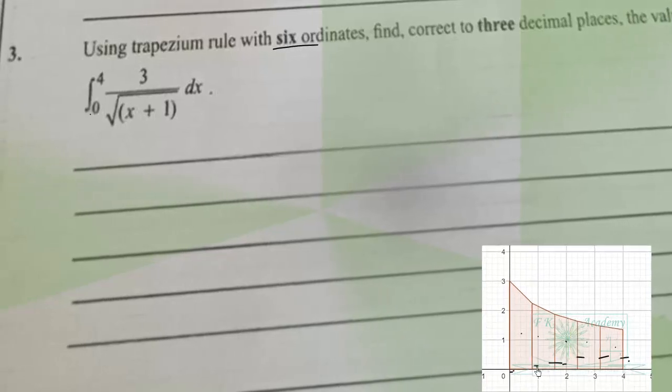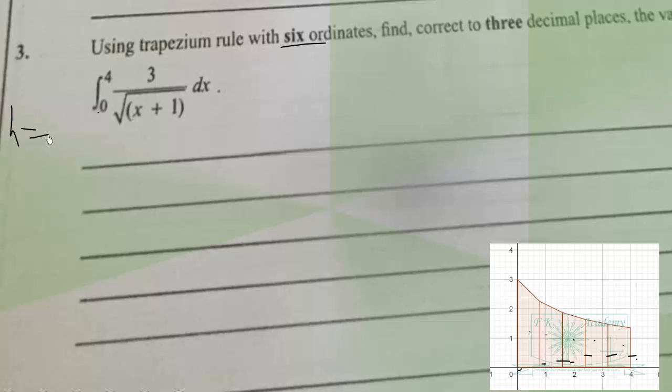The height will be given by h equals b minus a, all over the number of trapezia. That's 4 minus 0, all over 5. Or we can say the number of ordinates minus one, which is 6 minus 1.